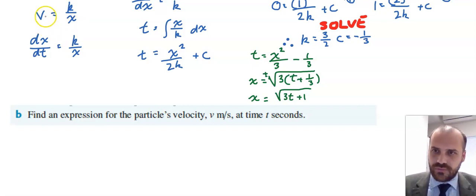So we knew that velocity is equal to k on x. And now we know that k is equal to 3/2. And we know that x is equal to this thing here.